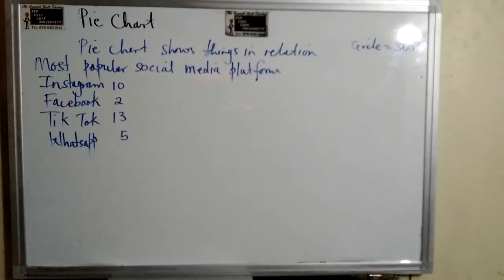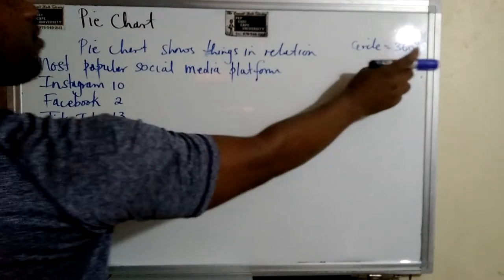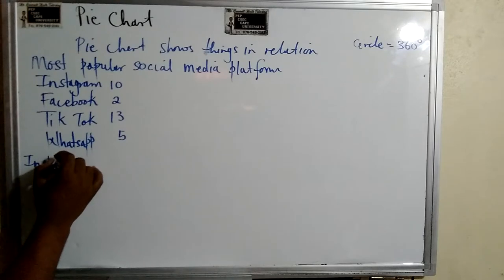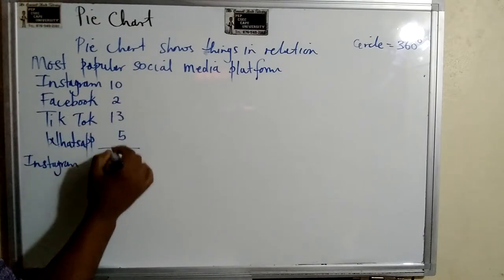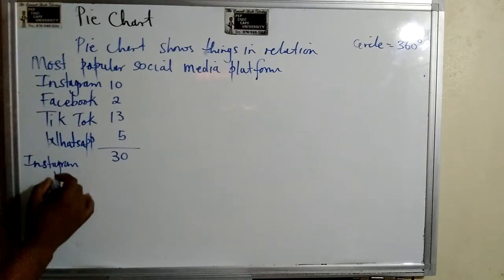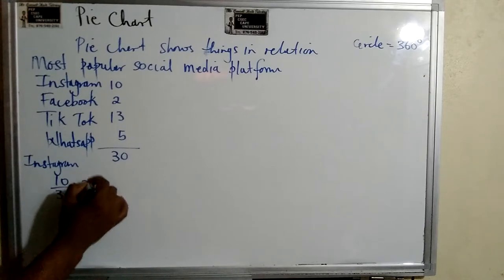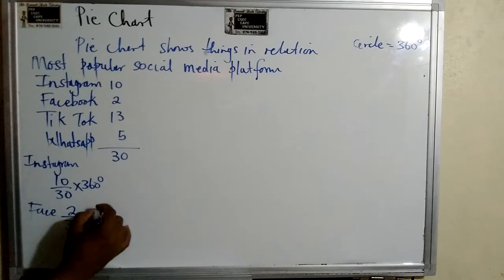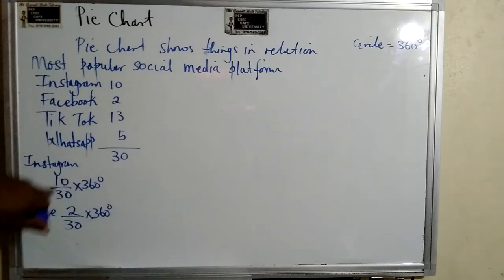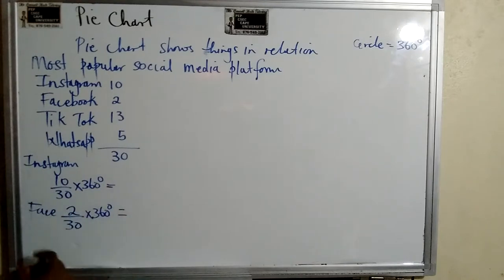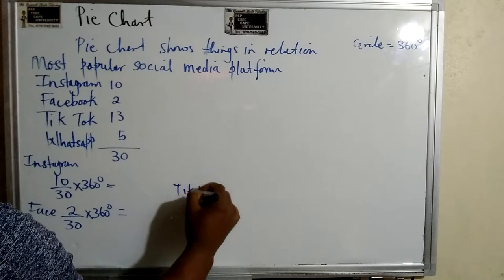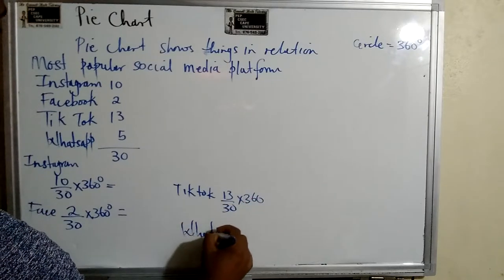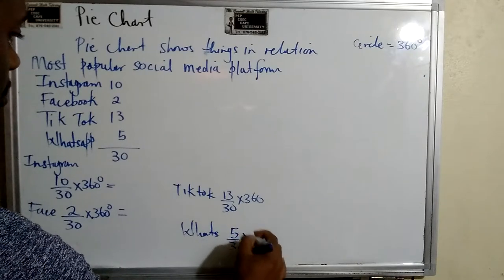So what we need to do is, for each one of them, we need to calculate how much degrees of the circular part of the thing. So let's say for Instagram now, it's 10 out of the total. And the total is 30, right? So the fraction would be 10 out of 30 times 360 degrees. Same thing for Facebook. It's 2 out of 30 times 360 degrees. Because what we're calculating is a fraction of the circle, right? And TikTok. It would be 13 out of 30 times 360 degrees. And WhatsApp represents 5 out of the 30 times 360 degrees.